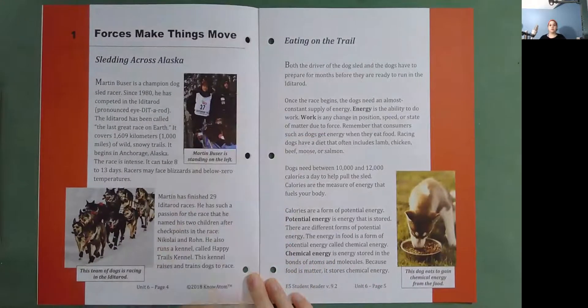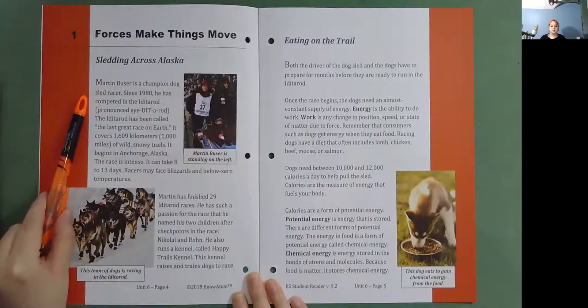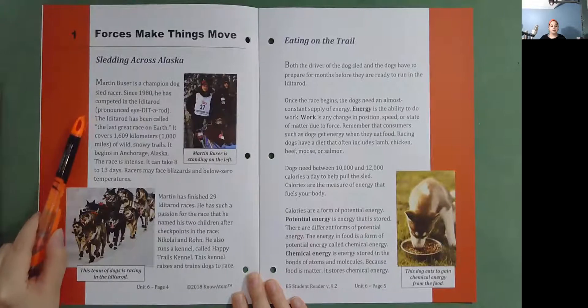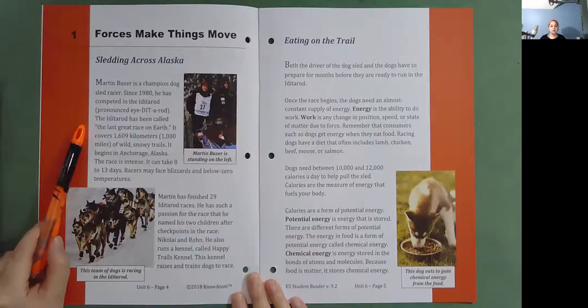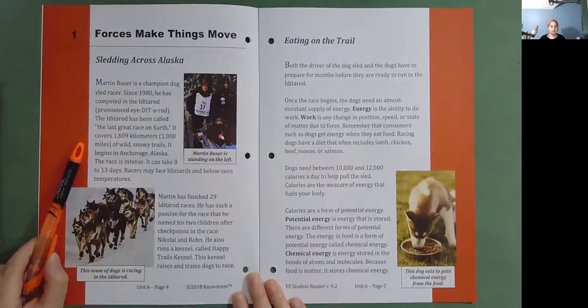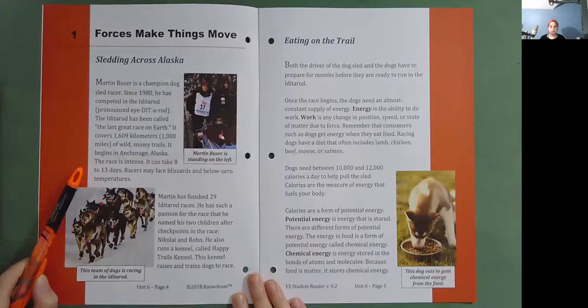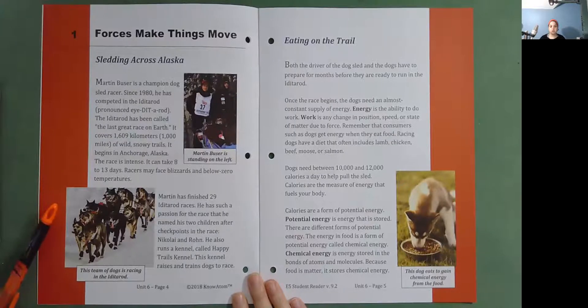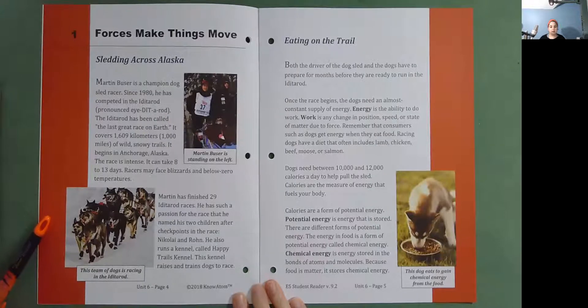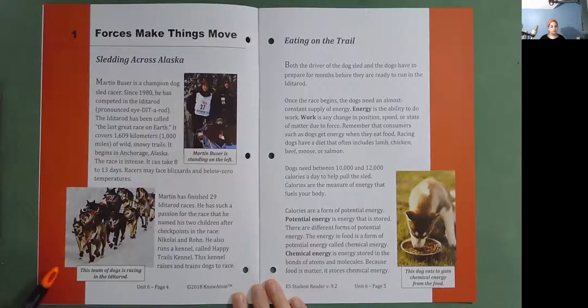Forces make things move. Sledding across Alaska. Martin Busser is a champion dog sled racer. Since 1980, he has competed in the Iditarod. The Iditarod has been called the last great race on Earth. It covers 1,609 kilometers or 1,000 miles of wild snowy trails. It begins in Anchorage, Alaska. The race is intense. It can take 8 to 13 days. Racers may face blizzards and below zero temperatures. Martin has finished 29 Iditarod races. He has such a passion for the race that he named his two children after checkpoints in the race, Nikolai and Roan. He also runs a kennel called Happy Trails Kennel. This kennel raises and trains dogs to race. This team of dogs is racing in the Iditarod.